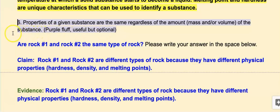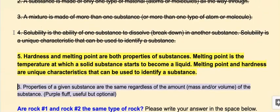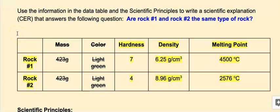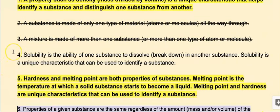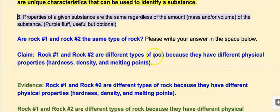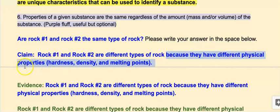To save time, I have pre-written answers here. The claim answers the question being asked. The question is: are rock one and rock two the same type of rock? Based on the information, they have different hardnesses, different densities, and different melting points. My claim is: rock one and rock two are different types of rock because they have different physical properties — different hardness, different density, and different melting points. If I just said 'rock one and rock two are different types of rock' with just that part, that would be an excellent answer and give me a proficient. By adding the extra detail at the end, that leads into the development of my thought process for the rest of my writing and bumps me up to an advanced.